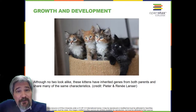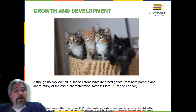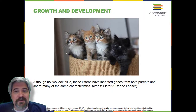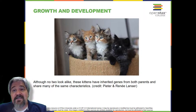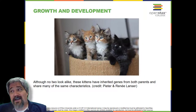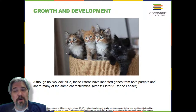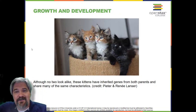Another requirement for life is the ability to grow and develop. Organisms grow and develop according to specific instructions coded for by their genes. These genes provide instructions that direct cellular growth and development, ensuring that a species' young — as these kittens illustrated here — will grow up to exhibit many of the same characteristics as their parents.